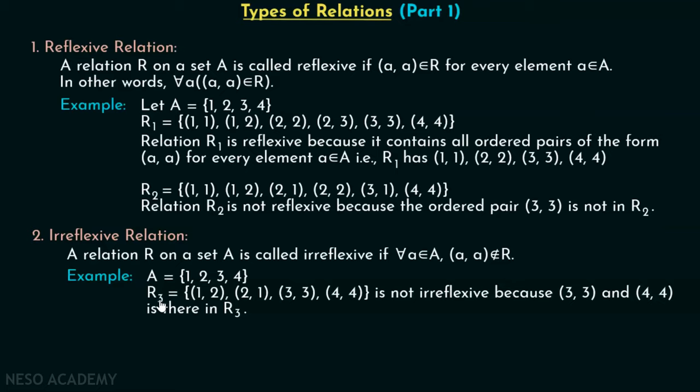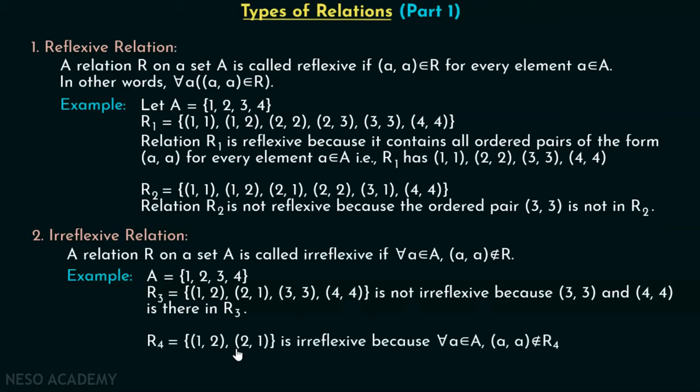Let's consider one example with the same set A as before. We are considering relation R3 which has ordered pairs: (1,2), (2,1), (3,3), (4,4). This relation is not irreflexive because (3,3) and (4,4) are in R3. For every element A belonging to A, the ordered pair (A, A) must not belong to R, but (3,3) and (4,4) are there in R3. On the other hand, relation R4 with ordered pairs (1,2) and (2,1) is irreflexive, because there is no ordered pair of the form (A, A) inside R4. Therefore, R4 is irreflexive.